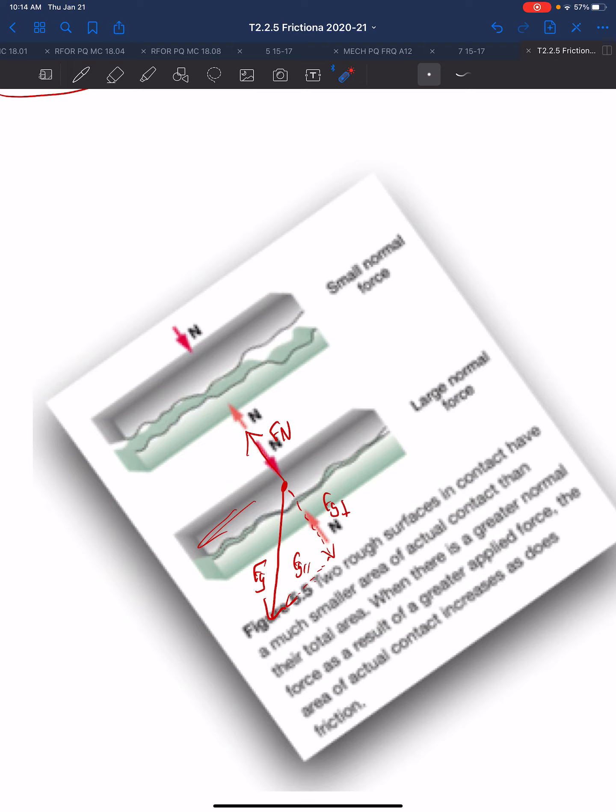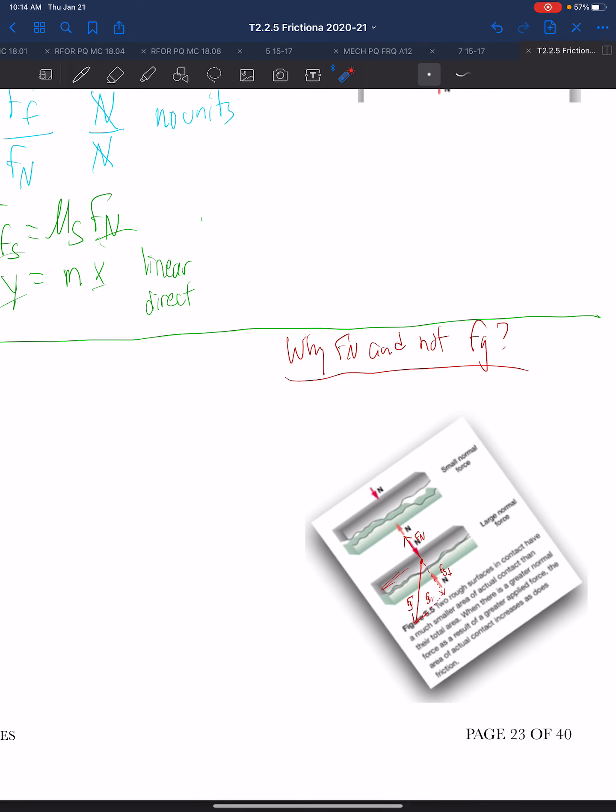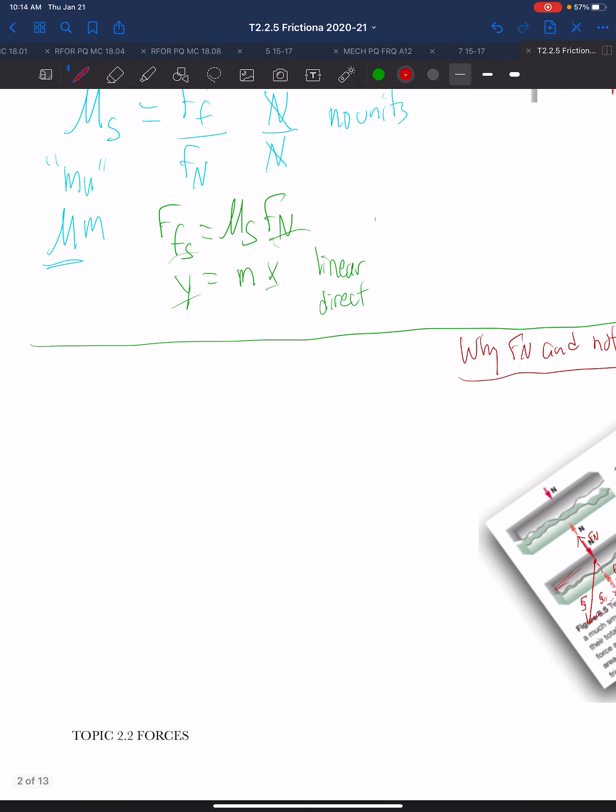So it's not the weight of the object that determines the friction. It is the normal force, that part of the force that is counteracting the force squeezing them together. That's why it is force normal and not the force of gravity. Let's now determine that value, that mu sub s.